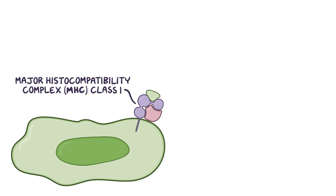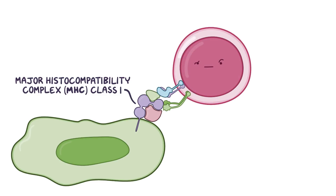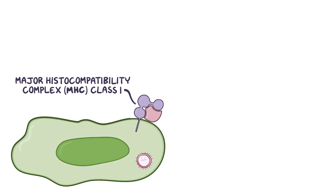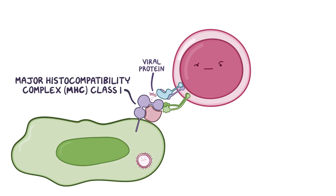Normally, the MHC class 1 protein serves up a normal, harmless molecule from the cell — a self-antigen — and there's no response. But if a cell is invaded by a pathogen, like a virus, then viral proteins are served upon the MHC class 1 proteins. When these viral antigens are displayed on the cell surface, it sparks an immune response.